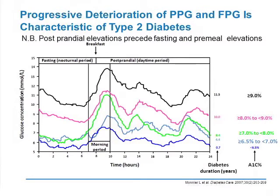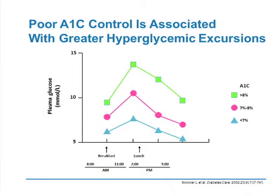When you look at what happens in people who have diabetes, there's a progressive deterioration. It's almost always the postprandial glucose that precedes the deterioration in fasting sugar. People with HbA1c less than 6.5 — the blue line — look very good. At 6.5 to 7, you start to see greater prandial excursions. At 7 to 8, you've got a large amount of prandial excursions but a fasting level that's not too bad. Above 9, your fasting is up and your postprandials are higher. Higher HbA1cs are associated not only with higher fasting but also higher postprandials.